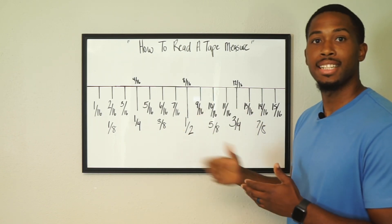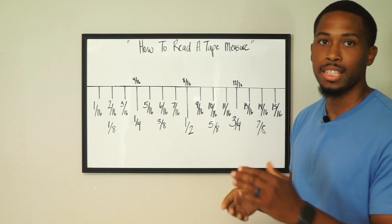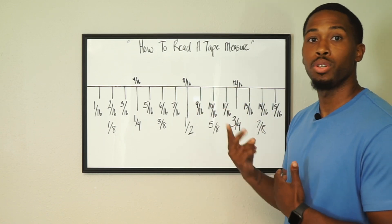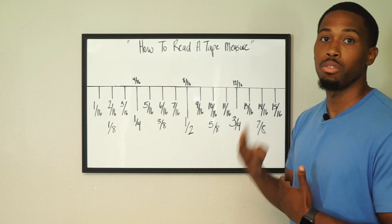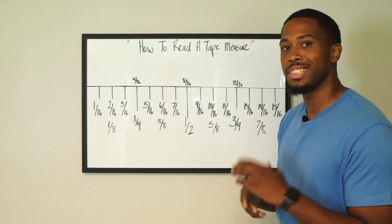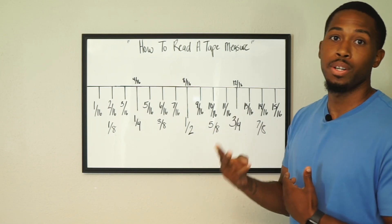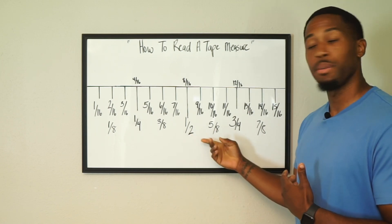Now we're going to go to eight sixteenths. Eight sixteenths is actually half an inch. I'm going to show you guys how to break that one down. Half of eight is four, half of four is two, and half of two is one. We broke that down three times. Now we have to do the same thing to sixteen. Half of sixteen is eight, half of eight is four, and half of four is two. That's how we come up with half inch.